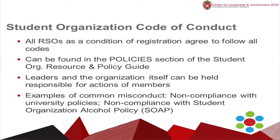As part of the application process in becoming a student organization, you are agreeing to the Student Organization Code of Conduct and this set of guidelines. You can find the entire Code of Conduct in the Resource and Policy Guide online underneath the Policies section. It is important that you are not only aware of these policies, but that you also make sure that the other members of the organization are aware of them as well. Both the organization as a whole and its individual members can be held responsible for violations. Common examples of misconduct include violating the student organization alcohol policy and leafletting or chalking policy violations.